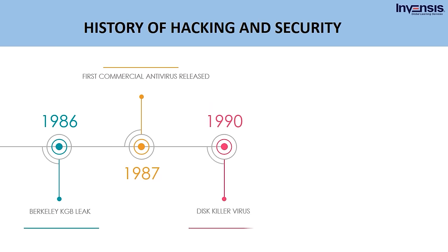In 1990, the English computer journal PC Today reported about the disk killer virus. Each issue of the magazine was accompanied by a disk, and the July issue was infected with a copy of the disk killer — more than 50,000 copies were sold. Disk killer was unable to spread because of a bug in the infection routine. PC Today launched a recall and tightened virus protection measures for the future.